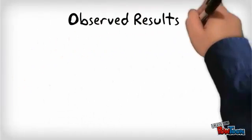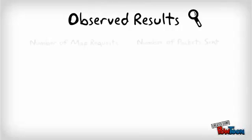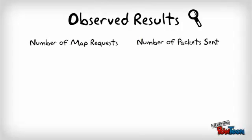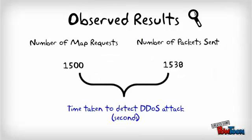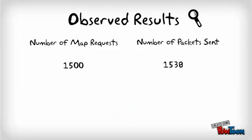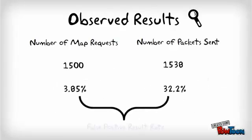Let's take a look at the results from the dataset. By using the number of map requests, it only took 1,500 seconds to detect a DDoS attack. In addition, the false positive rate is significantly lower at 3.85%.